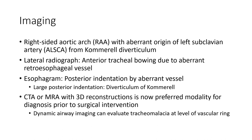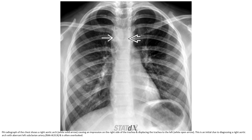PA radiograph of the chest shows a right aortic arch causing an impression on the right side of the trachea and displacing the trachea to the left. This is an initial clue to diagnosing a right aortic arch with aberrant left subclavian artery and is often overlooked.